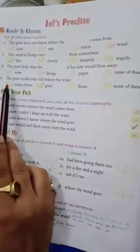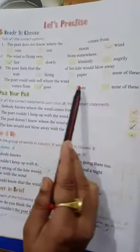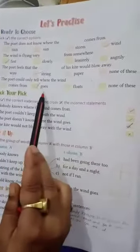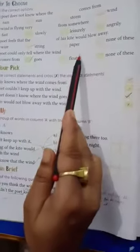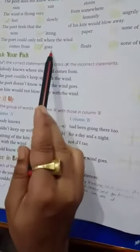Question number 4. The poet could only tell where the wind blank. What is the answer? Goes. Right here and tick the goes.